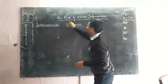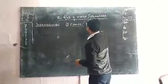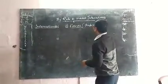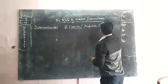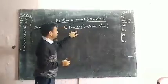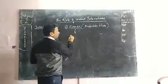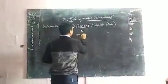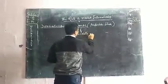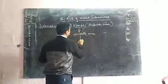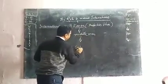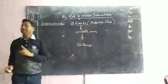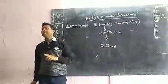In market terms, the farmer is the first person — the production house. From the farmer, a middle man comes in between, and from there the goods reach the customer. So the flow is: farmer → middle man → customer. This chapter is all about that middle man's role in the market.